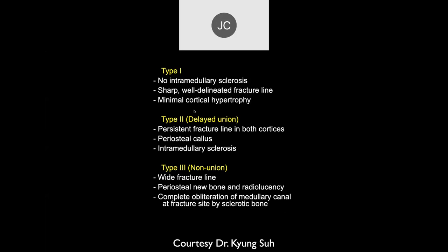To differentiate the types of stress fracture and acute Jones fracture: Type 1 shows a sharp delineated fracture line, edema on both sides on MRI, no sclerotic bone at the margins, and no cortical hypertrophy — this is before a healing response begins. In delayed union — Type 2 — you start seeing a fracture line with a healing response involving the cortices, periosteal callus formation on both sides, and intramedullary sclerosis. Periosteum is very important in healing these fractures.